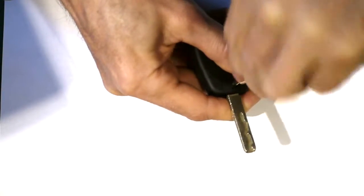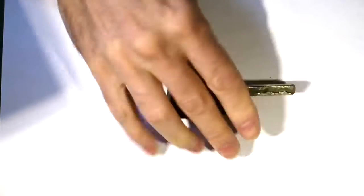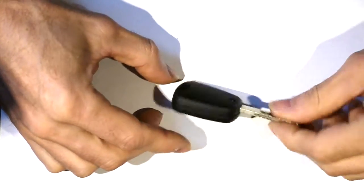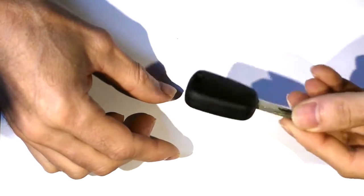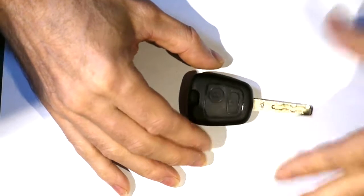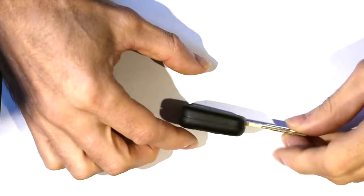Need to program via Peugeot Planet 2000 the immobilizer or BSI to accept this new transponder. Need the security code of the immobilizer. Of course I don't have that.